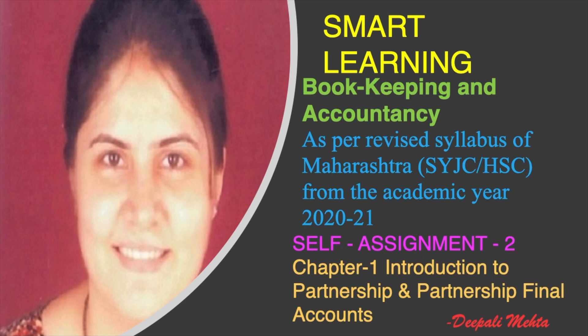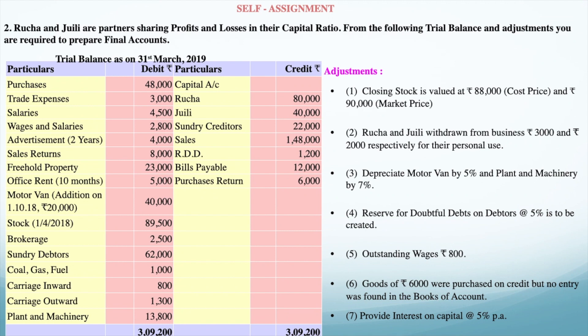Okay, so let us see the question. This is your second question of your self-assignment. Ucha and Julia are partners sharing profit and losses in their capital ratio. From the following trial balance and adjustments, you are required to prepare the final accounts.